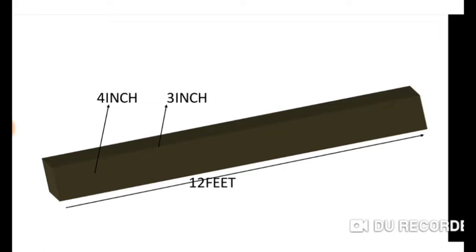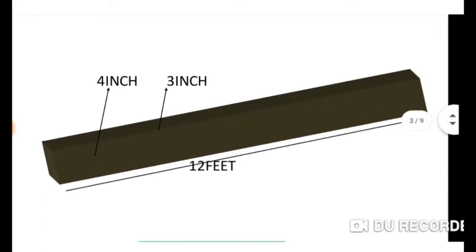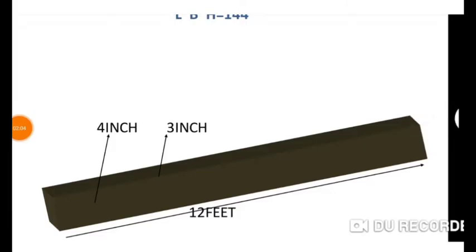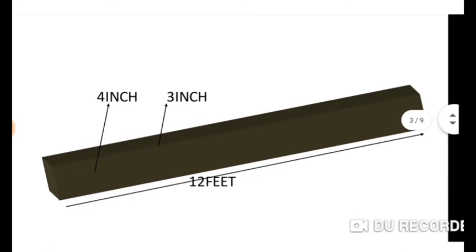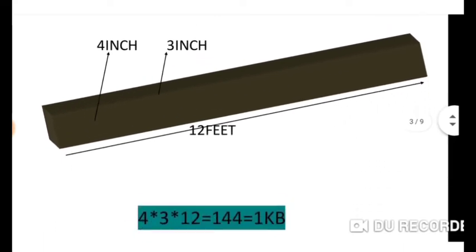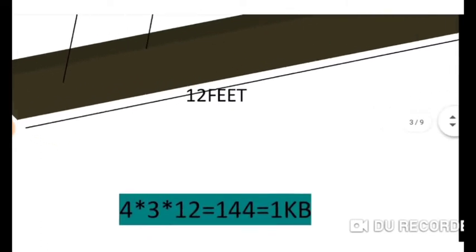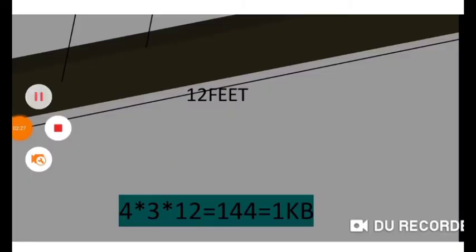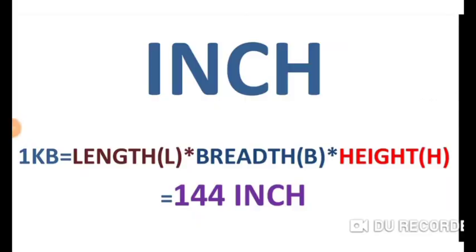This is the length of the length. As we need this length, we need to cut the length. The length is cut. Length, breadth, height. In the same way, if I prefer 4, I will try to compare 144 square inch. As I can, I am going to pass 144 square inch.